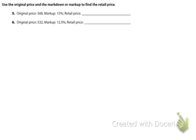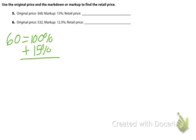5 and 6 are both markups. So $60 represents 100%. It's being marked up, so it's increasing by 15%. Our new percentage is 115%, and we want to know what is 115% of our original price.